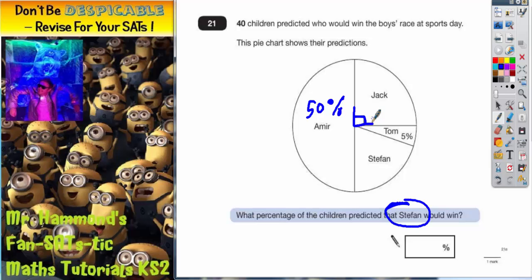A right angle is a big giveaway in a circle because a right angle is a quarter. It takes up a quarter of the angle of the circle. A quarter as a percentage is 25%. So 25% of the children must have thought that Jack was going to win.